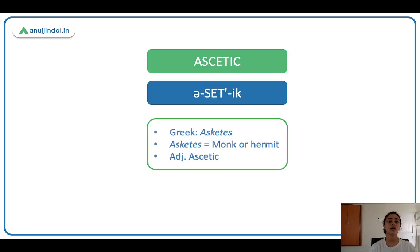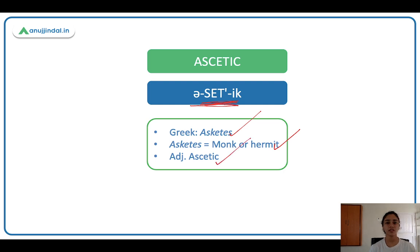Ascetic — note the pronunciation: ascetic. It comes from the Greek word 'asketos,' meaning monk or hermit. Its adjective is also ascetic.